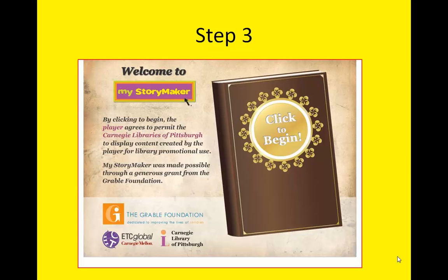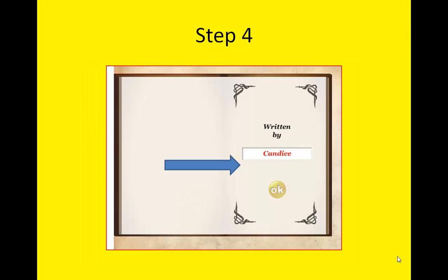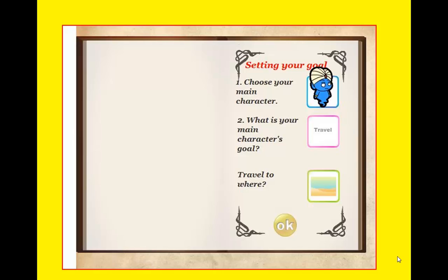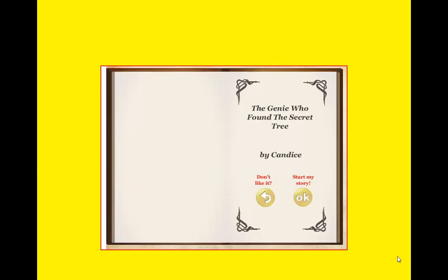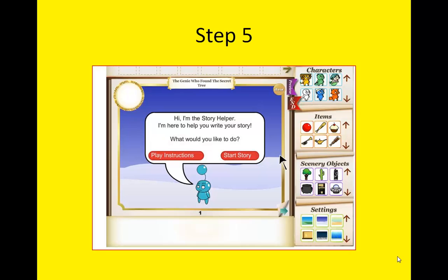You will then be directed to a welcome screen. You'll want to click on the book to begin. You'll immediately begin setting up the pages of your story by typing in the author, setting a goal, a main character, and a setting. My Story Maker will then ask for your approval and then you will begin diving into the pages of your book. You can either create your story with some instructions or dive right in and start. In this sample, you'll see that we dove right in and started creating our story.